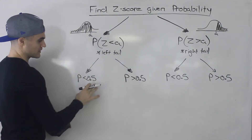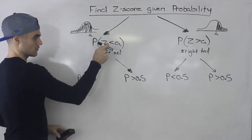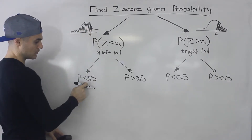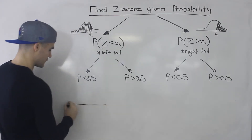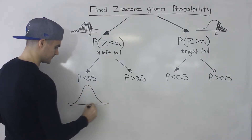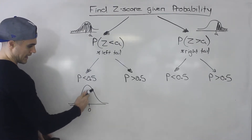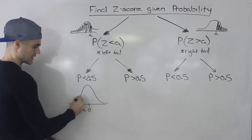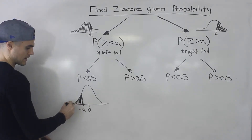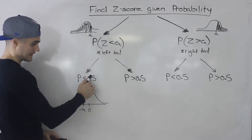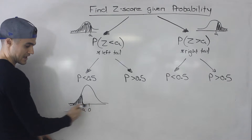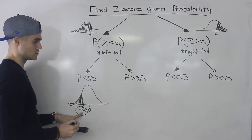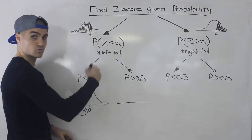Let's break these scenarios down further. If we're finding the Z-score given a probability to the left of A, and that probability is less than 0.5, then the A value is going to be negative. Because if 0 is in the middle and the area to the left of A is less than 0.5, A must be on the left side of the normal distribution — so that Z-score is negative.